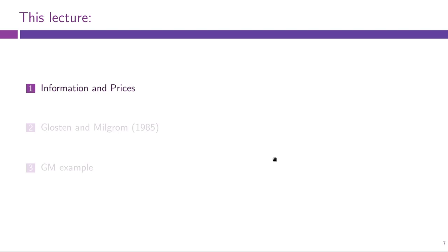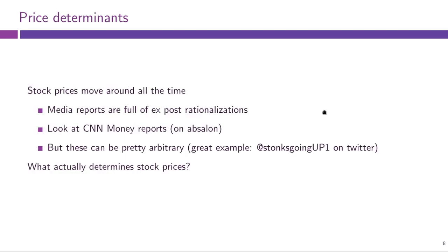So this is the broad plan for today — basically there are two parts. Let us begin with a general discussion of information and prices. Now, in the real world, stock prices move around all the time. If you look at stock price graphs, they are very fine, very precise — there is a lot of movement, a lot of volatility for any actively traded asset.